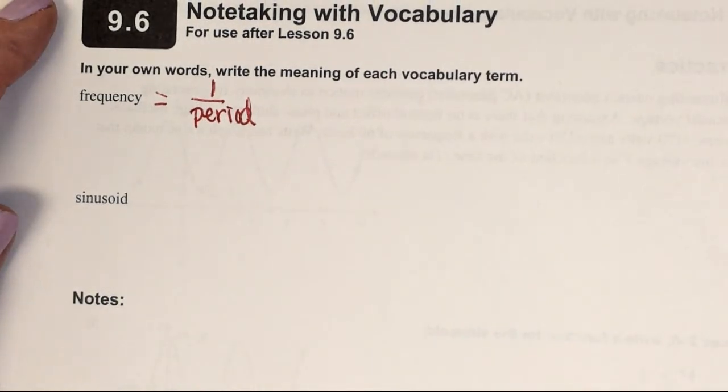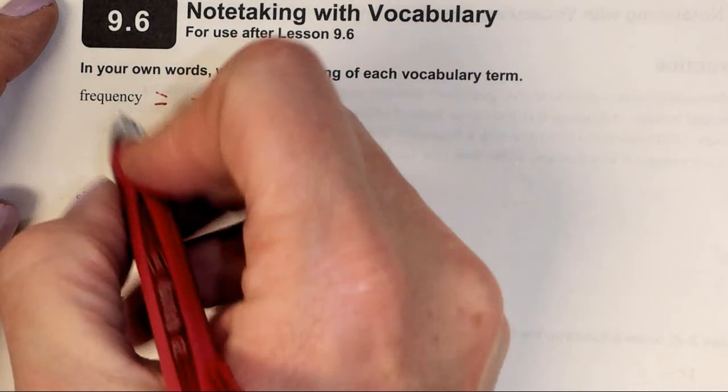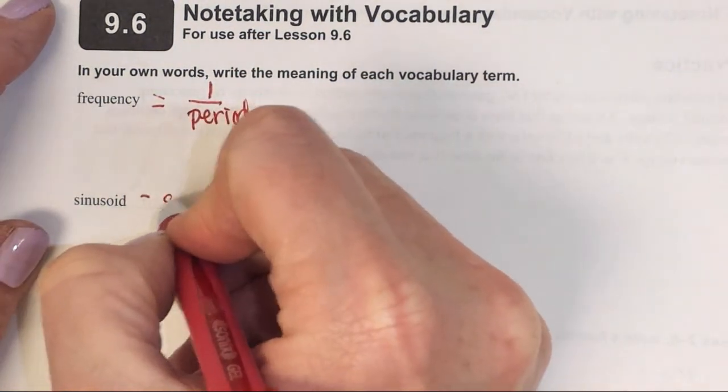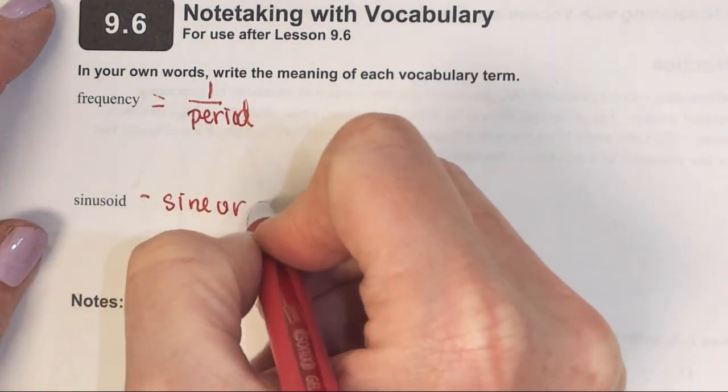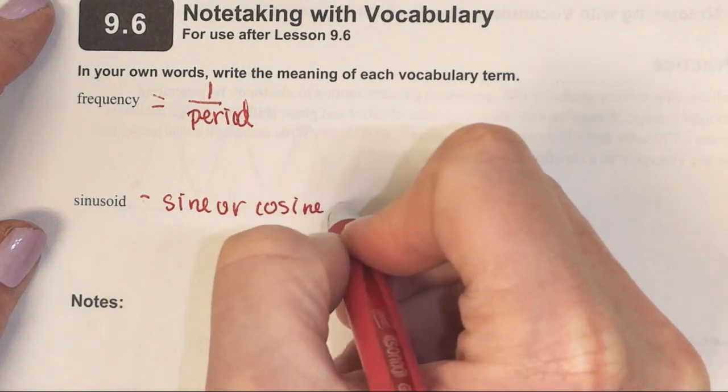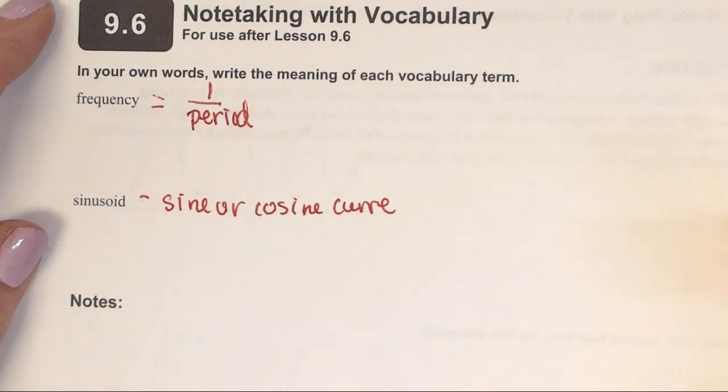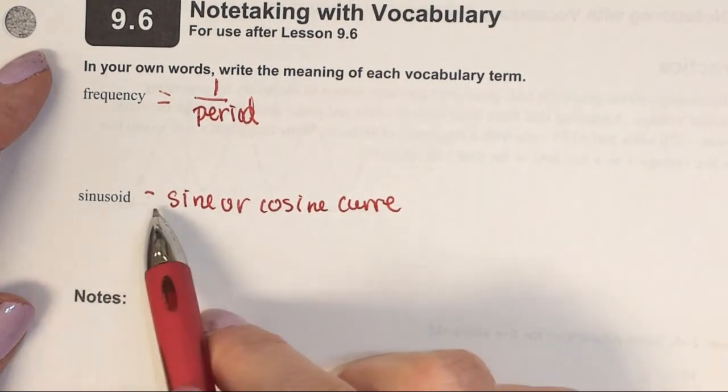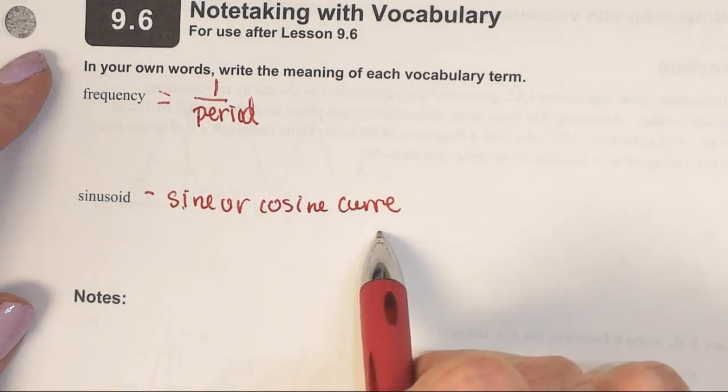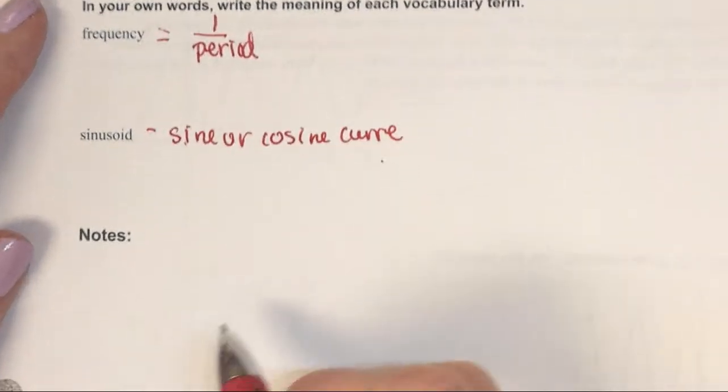A sinusoid can be either a sine or cosine curve. So when it says to find the sinusoid, it's talking about the sine or the cosine curve.